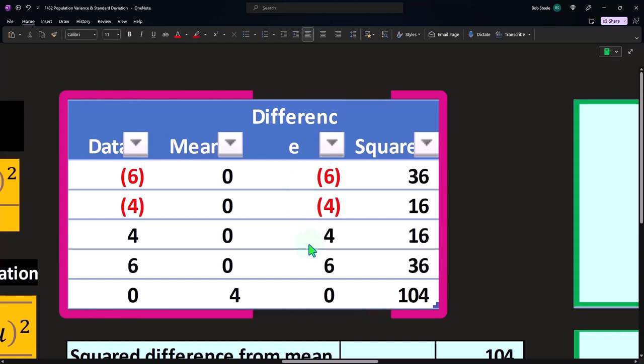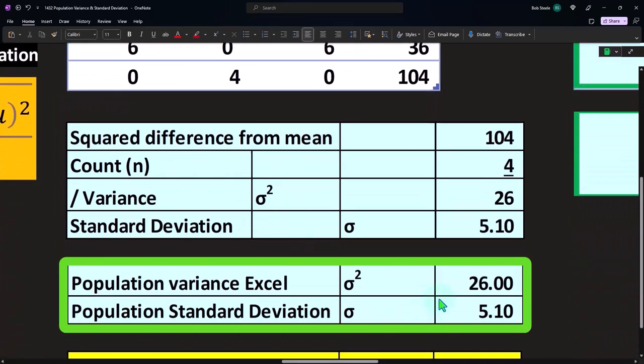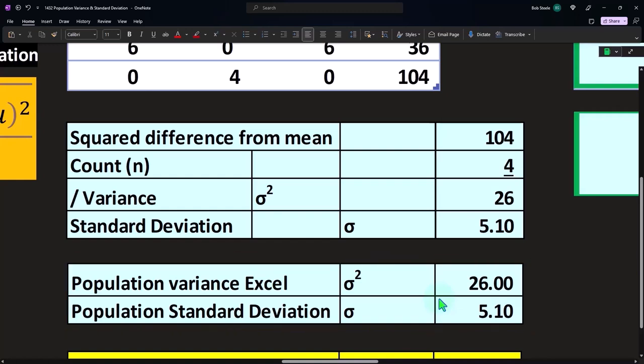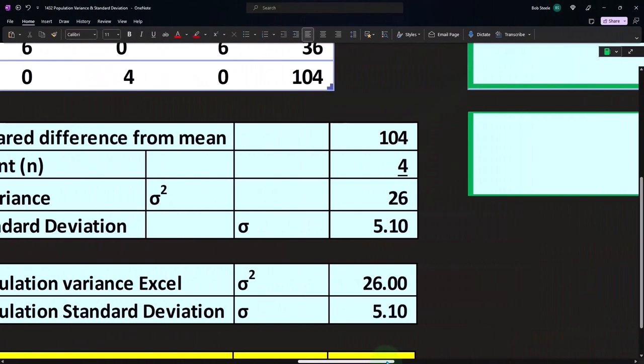These numbers can seem more abstract than when we talk about simply the mean or average of a data set. Sometimes it's useful to compare multiple data sets, and we'll talk more about that in future presentations.